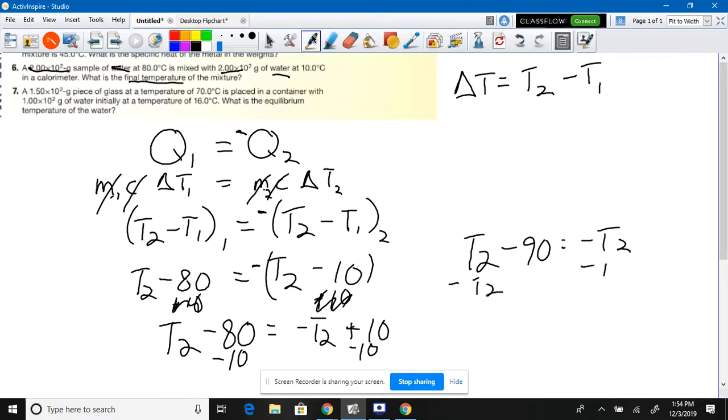Subtract T2 from both sides. Negative 90 equals negative 2 T2. So what's my final temperature? 45 degrees Celsius. That's algebra, dude.